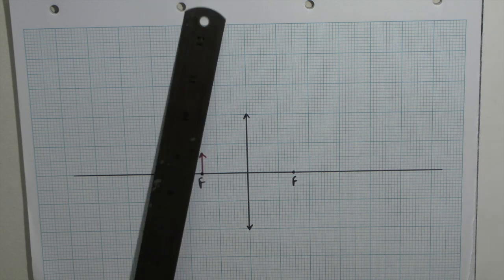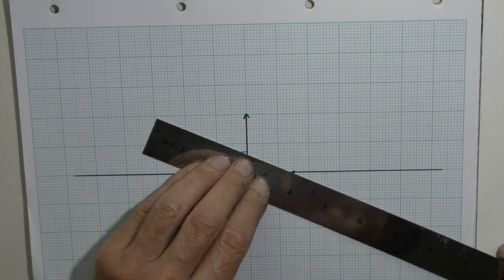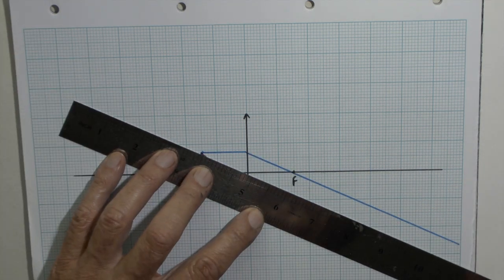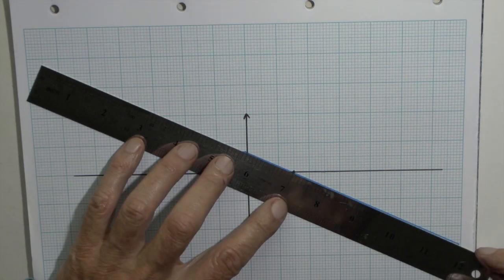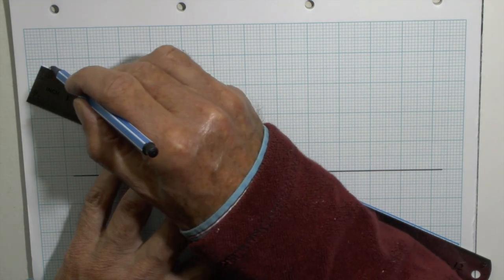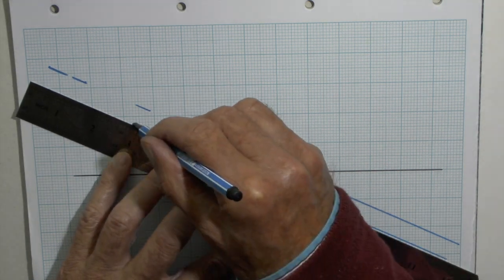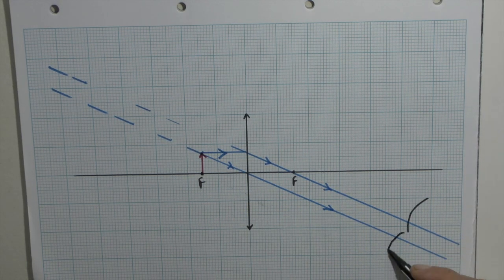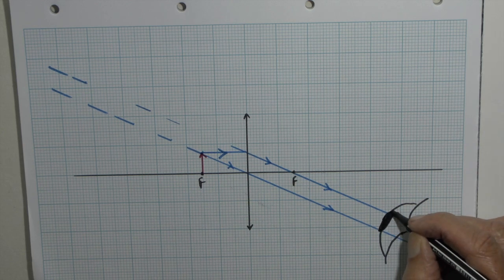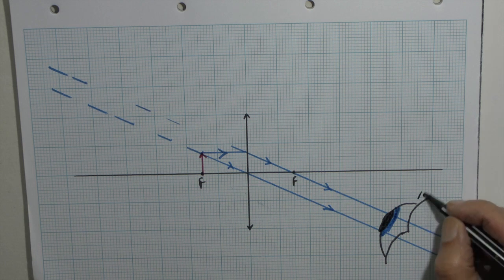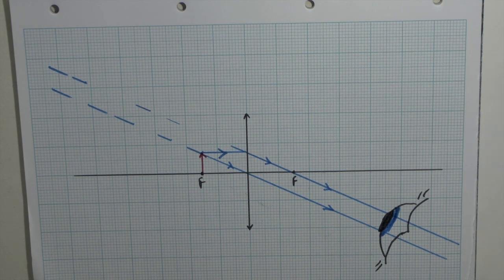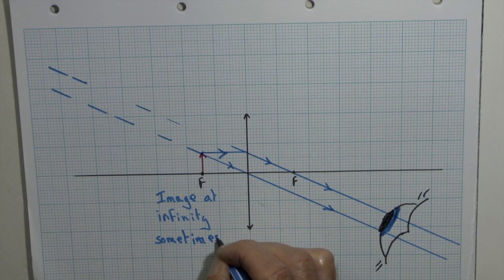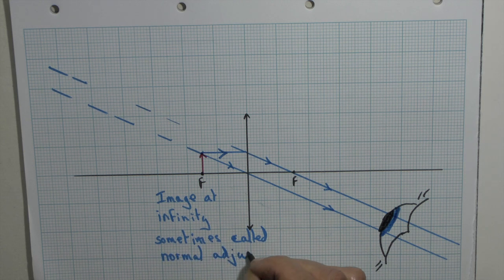One arrangement which I'll quickly mention, because it's often drawn in examination papers or questioned in examination papers, is when the object is on the focal point. In that case, the rays of light which we're drawing here are parallel. They don't meet whether we extend them backwards or forwards. The eye however has a lens in it, and it will focus those onto the retina. So the image that is seen is still a magnified, though virtual image. This is often referred to as normal adjustment for the lens.